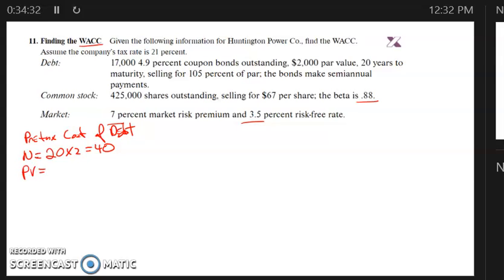PV is the price, minus 105. Payment is 100 times the coupon rate of 4.9% divided by 2. That's 2.95.